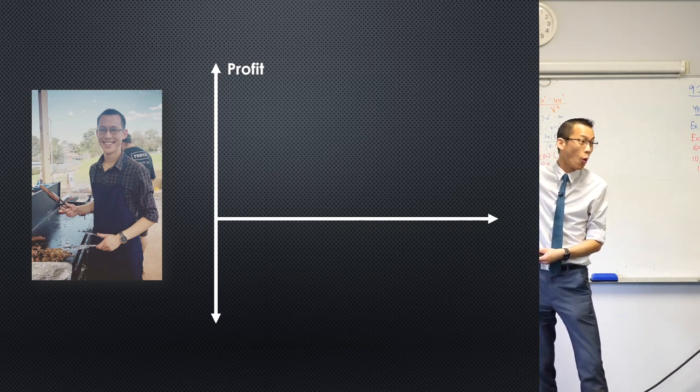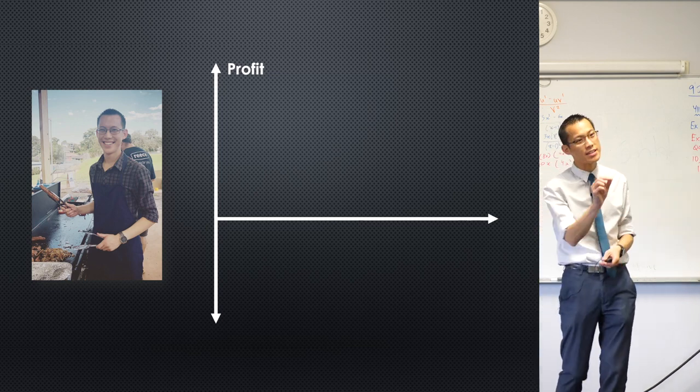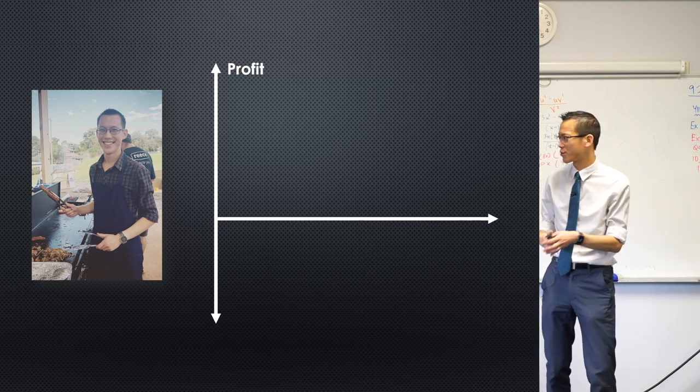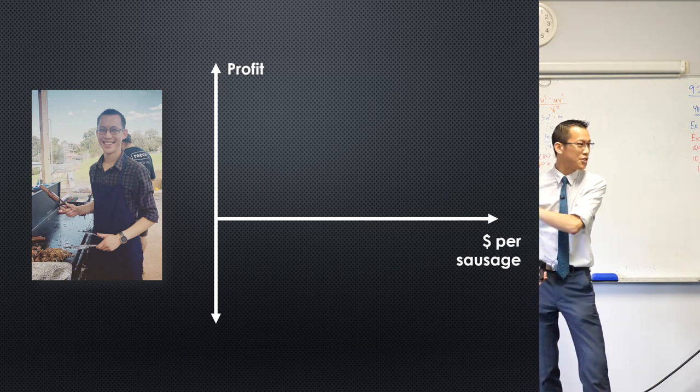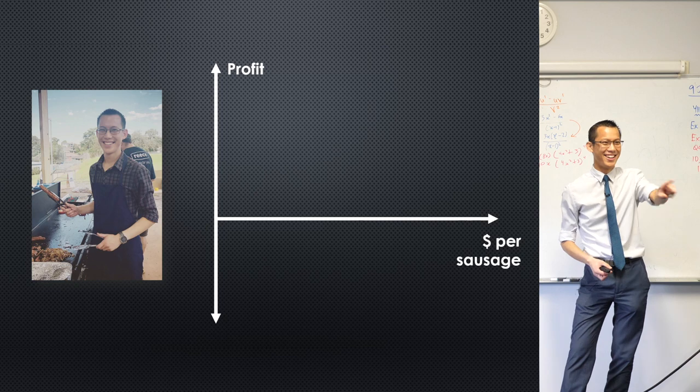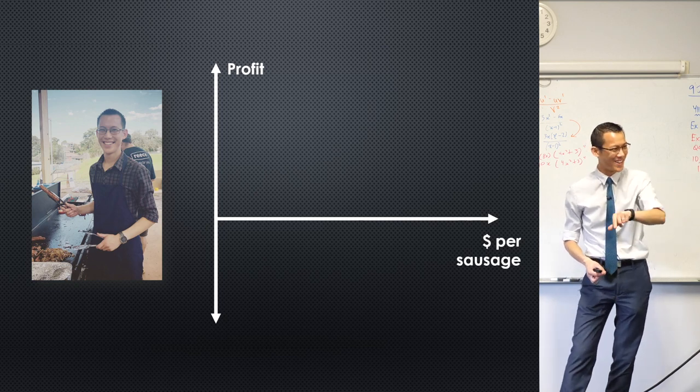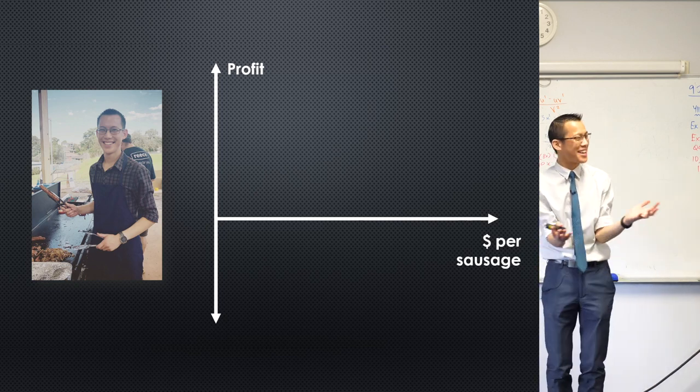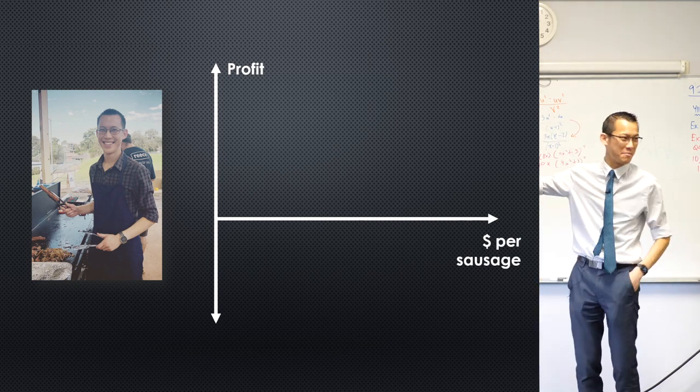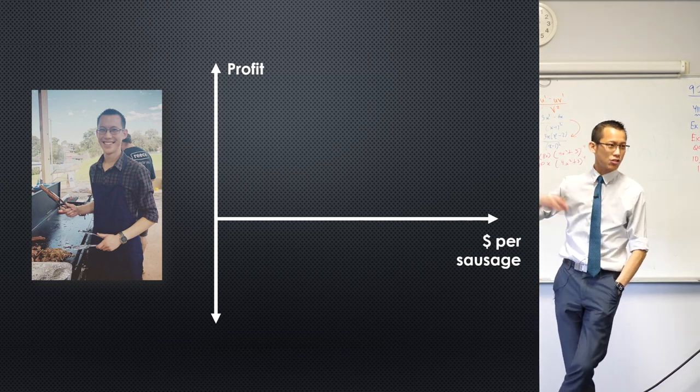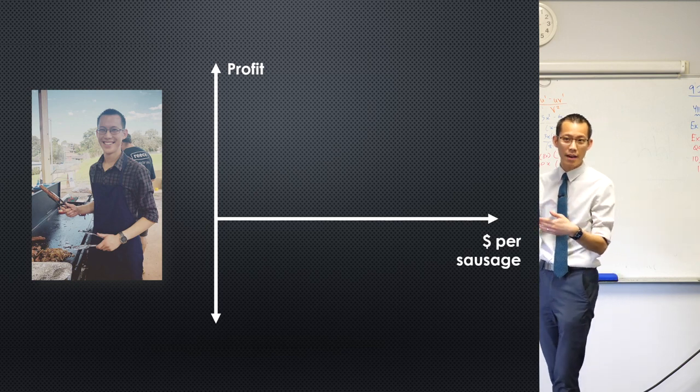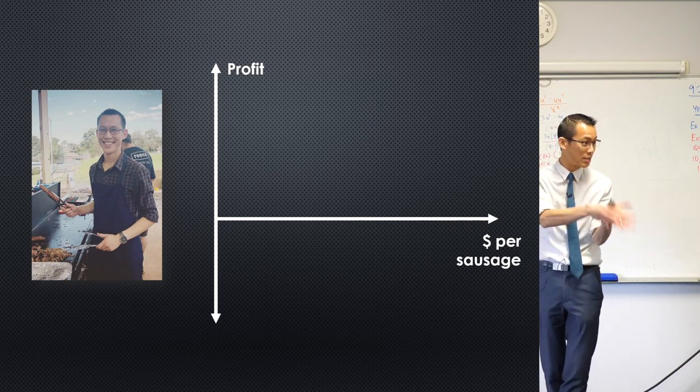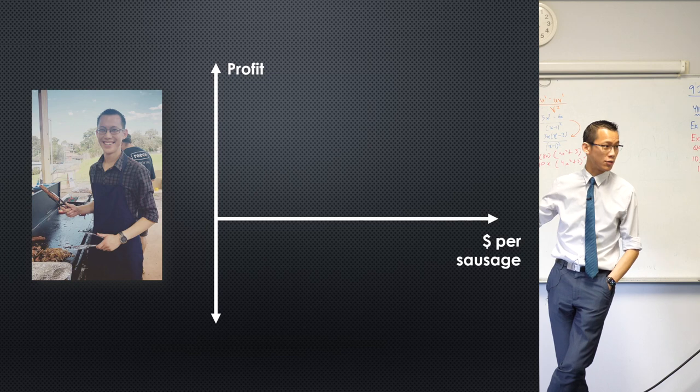We can increase or decrease our profit by virtue of the choices that we make and there's a very simple choice that we have all control over when you're running a barbecue like this which is how much you're gonna charge, right? Now I will leave questions about who you're gonna charge what to another point, let's just say for the sake of being egalitarian, we're gonna charge everyone the same thing but I hope you can see that as you change the amount, as you change the amount that you charge per sale you're gonna change the amount of profit that you've got. Do you agree with that?